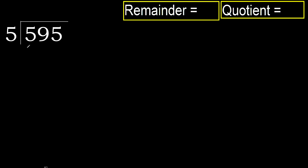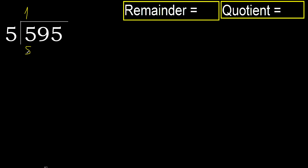595 divided by 5. 5 is not less, therefore start with 5. 5 multiplied by which number is nearest to 5, but not greater? 5 multiplied by 2 is 10 — 10 is greater. Multiplied by 1 is 5, is not greater, ok. 5 minus 5 is 0.